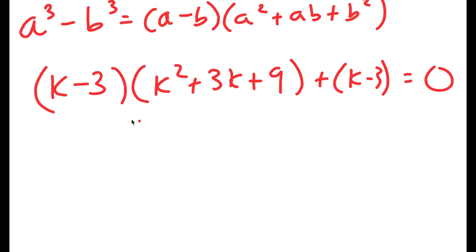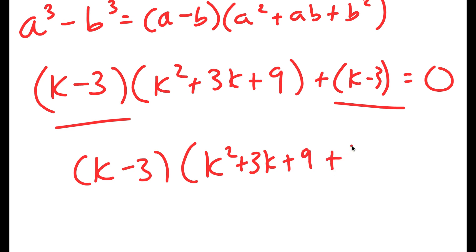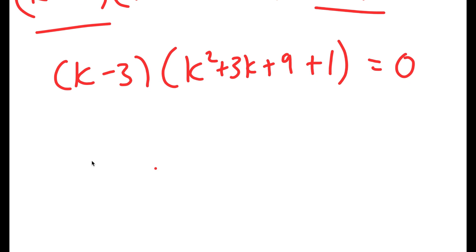Now because both of these terms have k minus 3 in them, I can factor out k minus 3. So I get k minus 3 times k squared plus 3k plus 9 plus 1 — because k minus 3 divided by k minus 3 is 1 — is equal to 0.